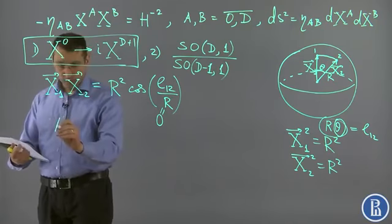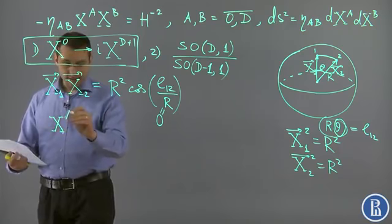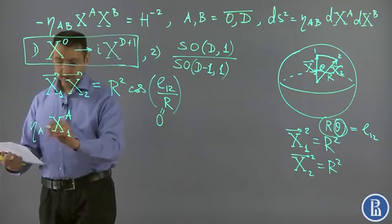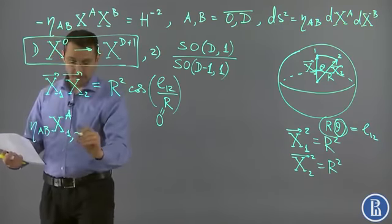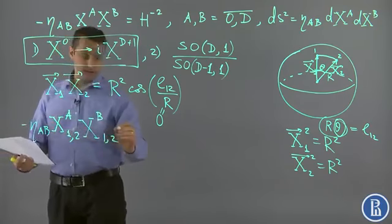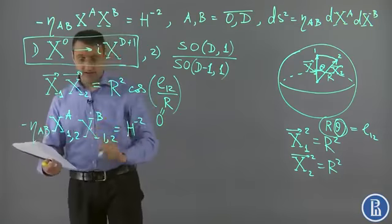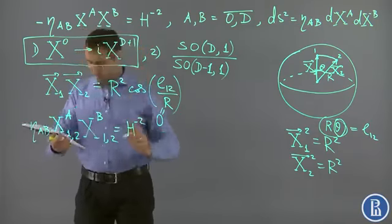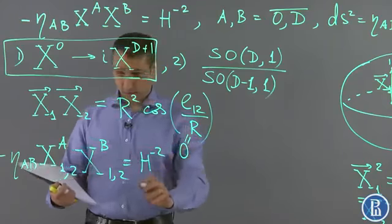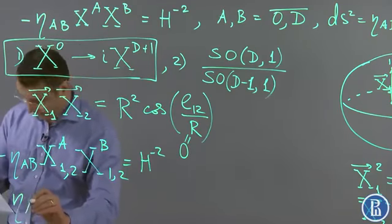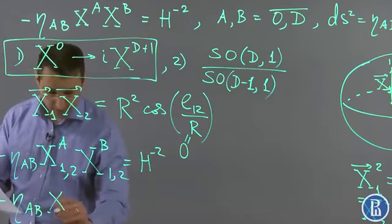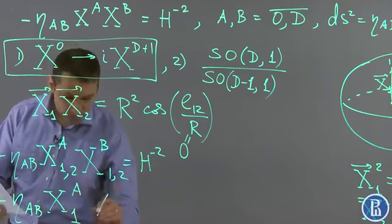If we have two points x1 and x2 both obeying this condition, laying on this hyperboloid, we can define the hyperbolic distance between them by taking the scalar product of x1 to x2.